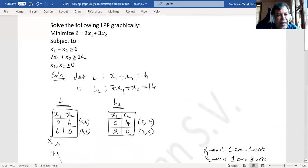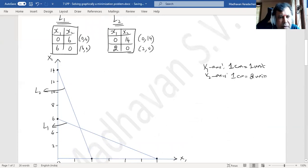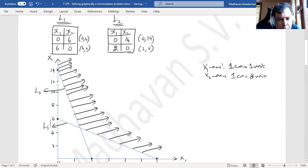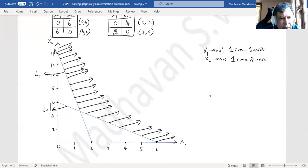Now both the inequations are having greater than or equality sign, so shading has to happen above these two lines. The common region will be like this. It is not a closed polygon. It is open this side.